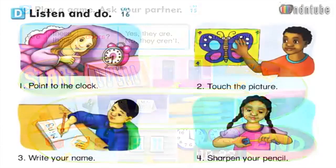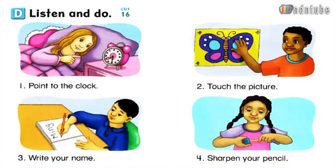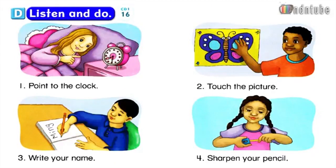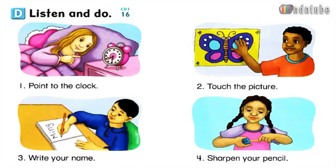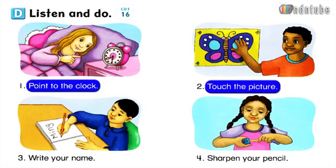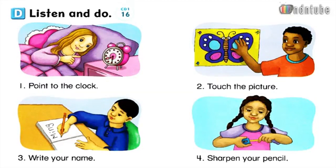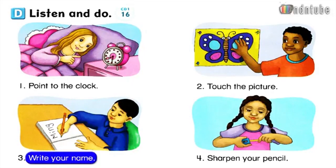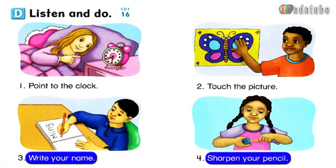Page 9. D. Listen and do. Number 1: Point to the clock. Number 2: Touch the picture. Number 3: Write your name. Number 4: Sharpen your pencil.